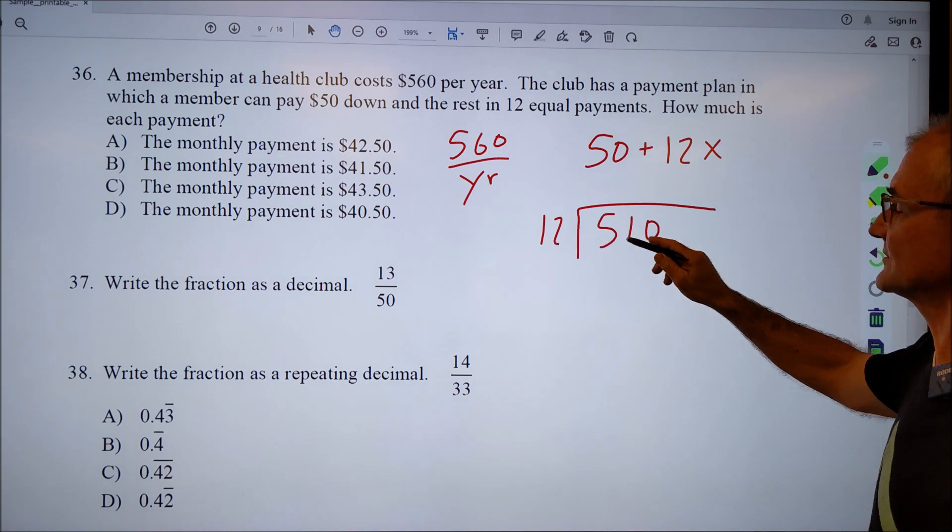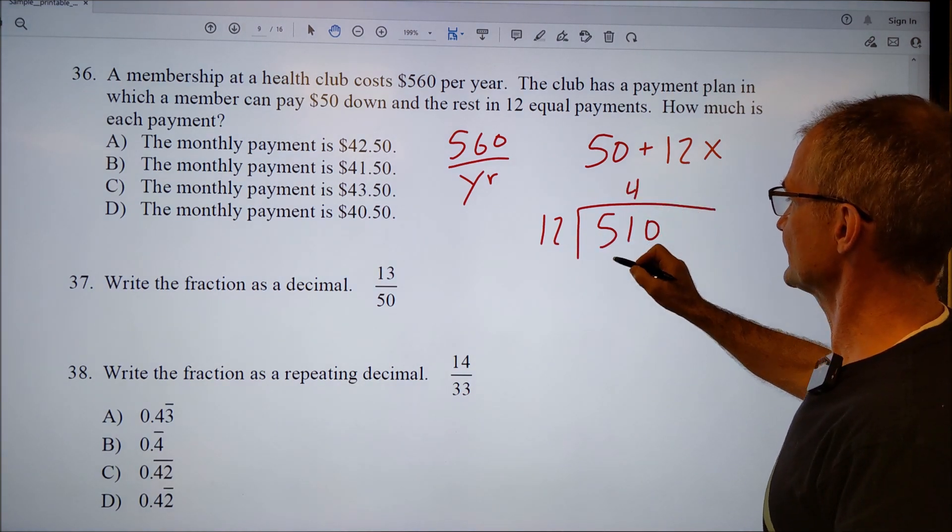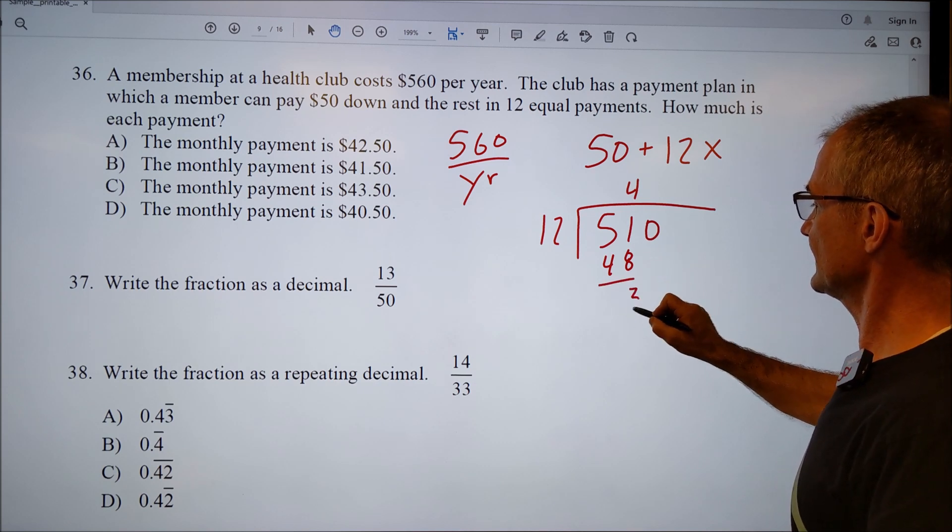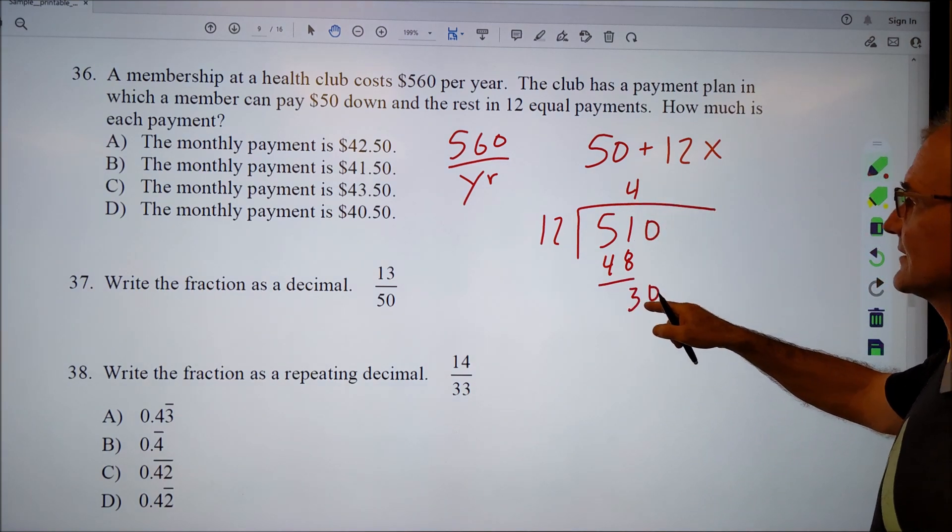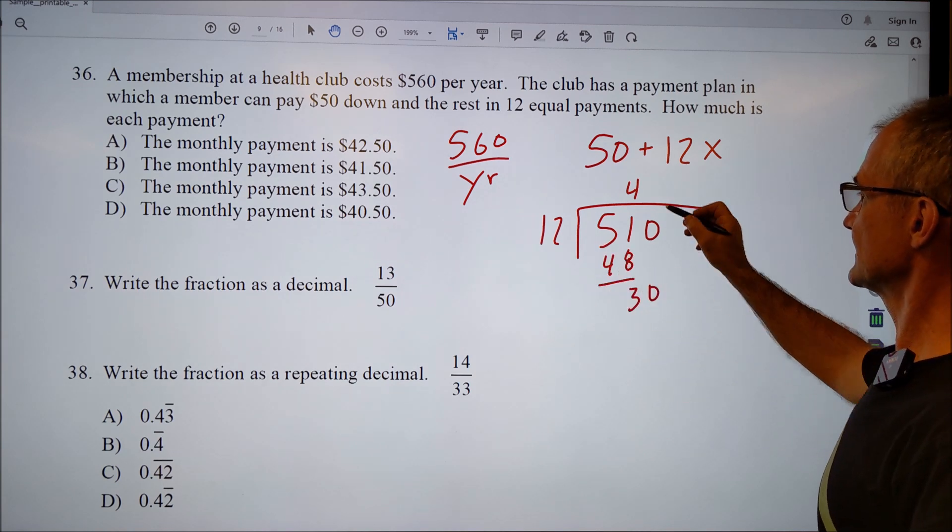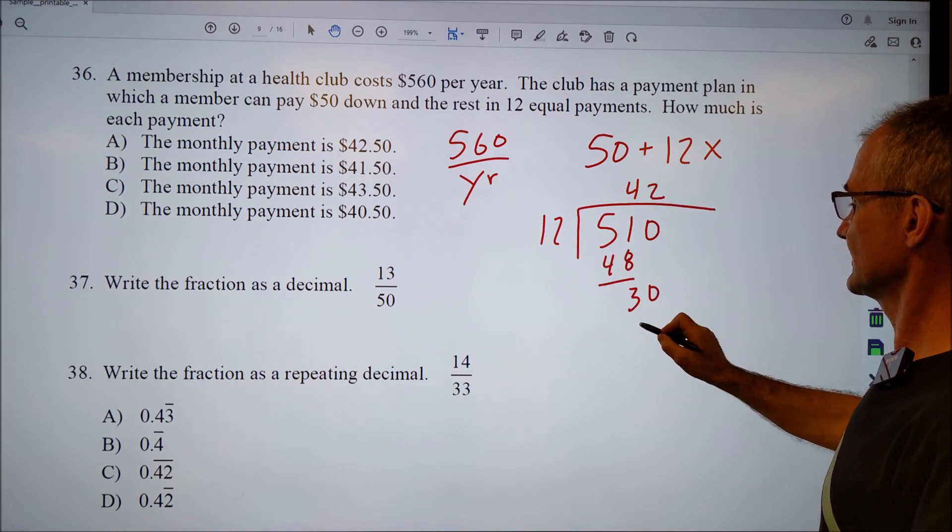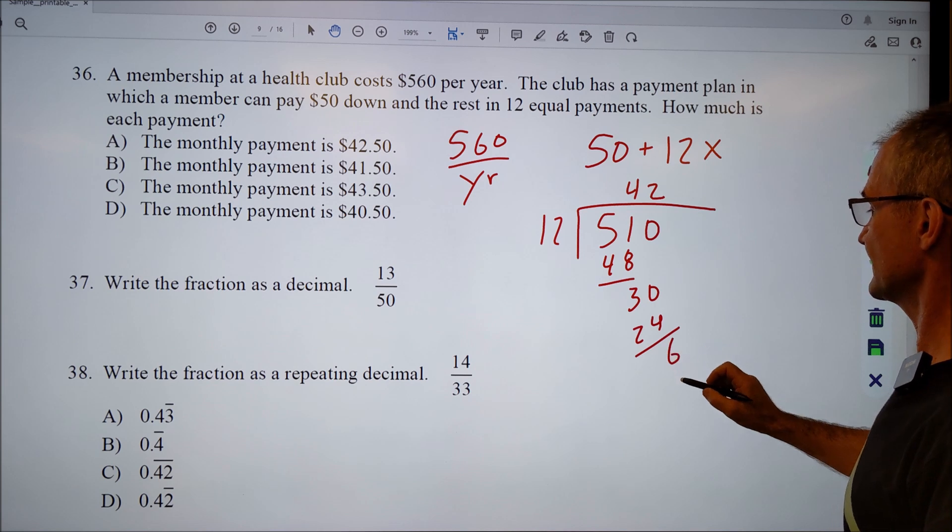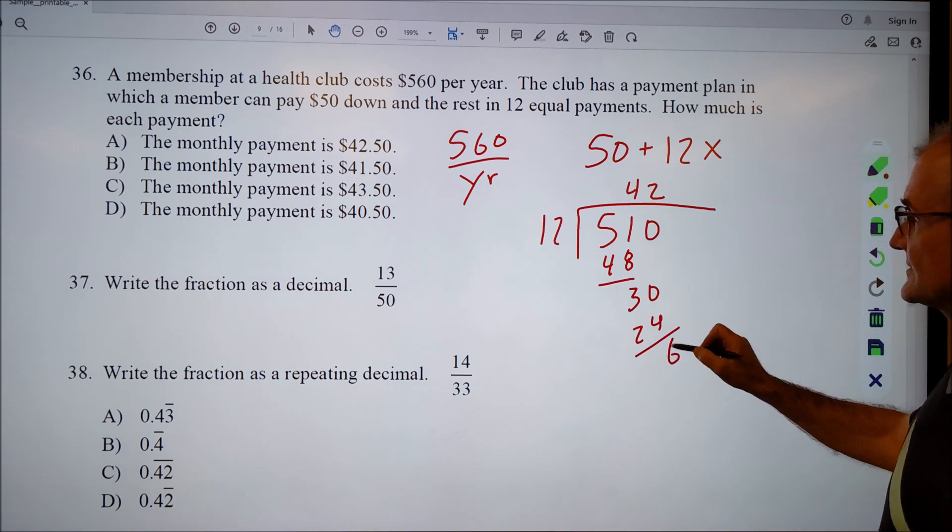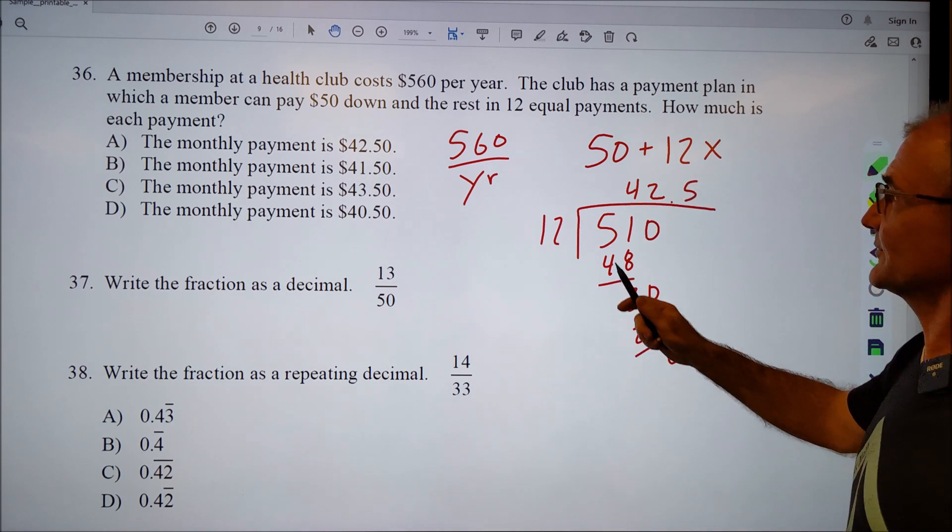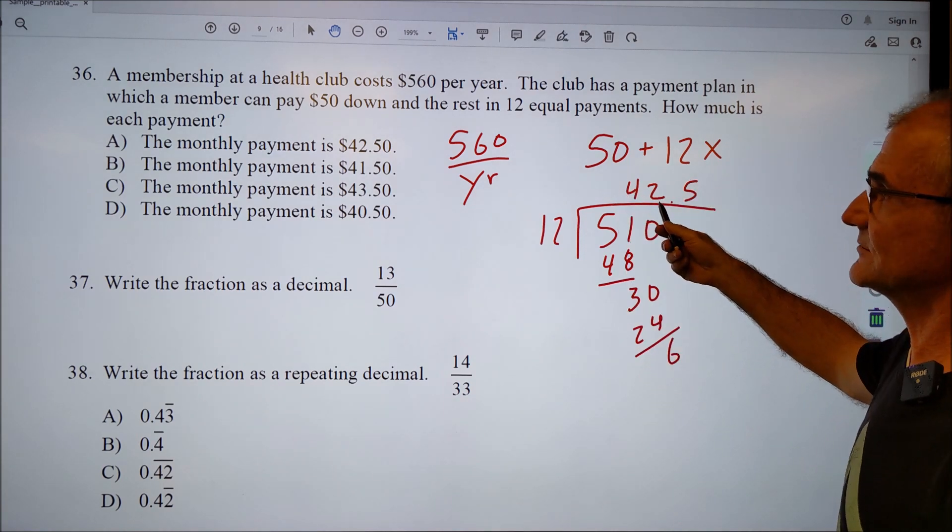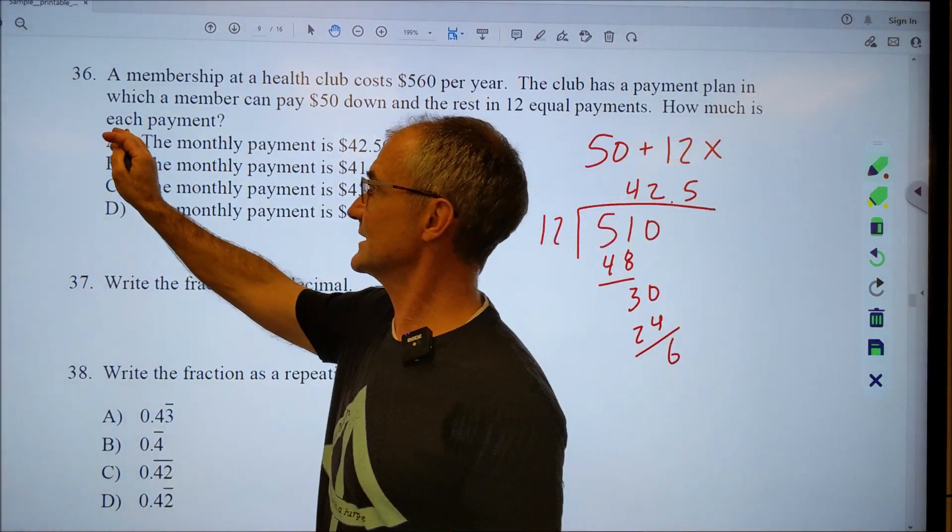So twelve goes into fifty-one four times, so give me forty-eight. Thirty, right? Fifty-one minus forty-eight is three. Bring down the zero. Twelve goes into thirty two times. Give me twenty-four with six left over. And that's a remainder of six twelfths. Six twelfths is a half. So I make a down payment of fifty dollars and spend forty-two fifty per month. That would be answer A.